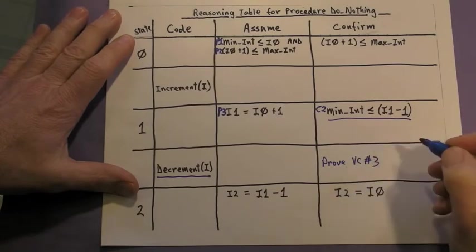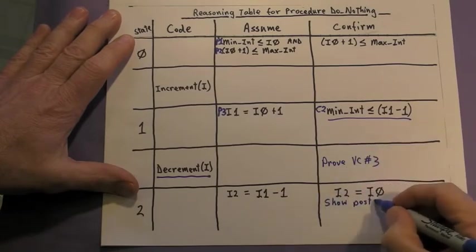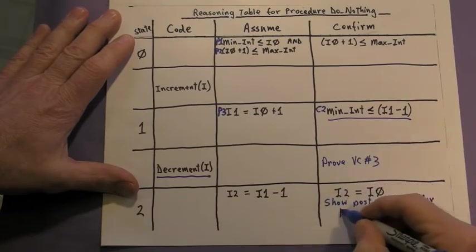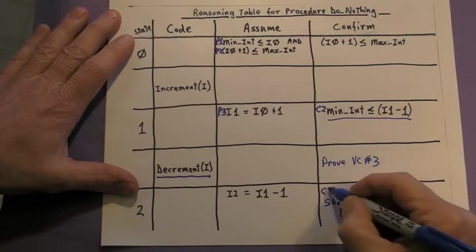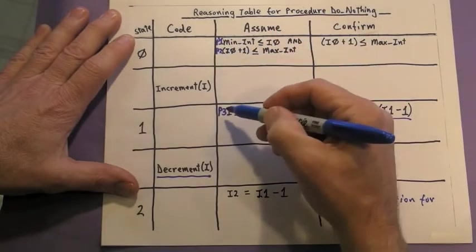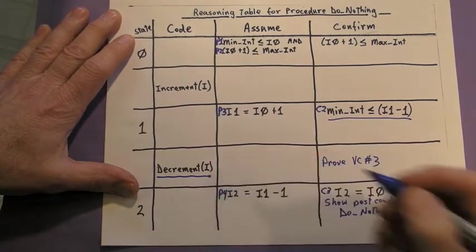Now let's work on VC number 3. We'll show that the post condition holds for do nothing. We'll label it C3. To show conclusion C3, we can make use of premises 1, 2, 3, and 4.